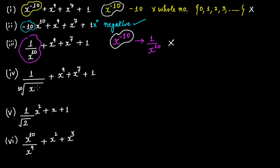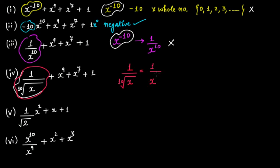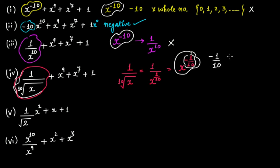This expression is 1 divided by the 10th root of x, then x raised to the power of 9, plus x raised to the power of 7, plus 1. In this case, the 10th root of x means x raised to the power of 1 by 10, which is actually x raised to the power of minus 1 by 10. The exponent of x is minus 1 by 10 — that is not a whole number. That's why this algebraic expression is not a polynomial.